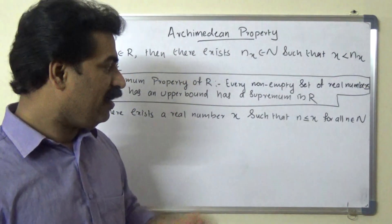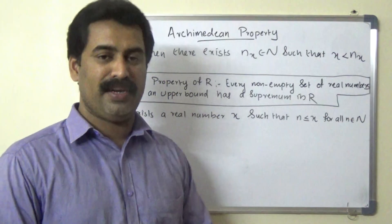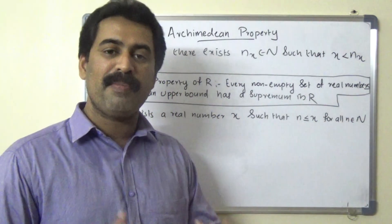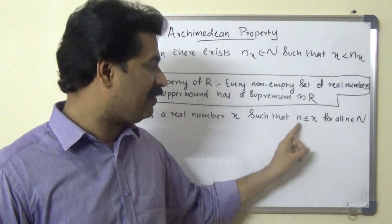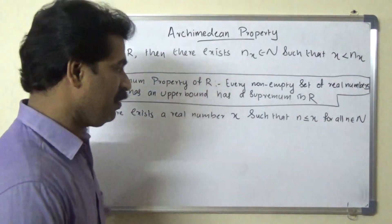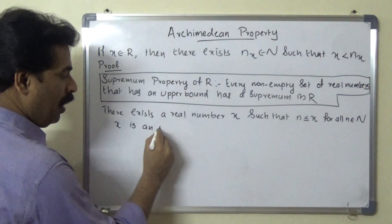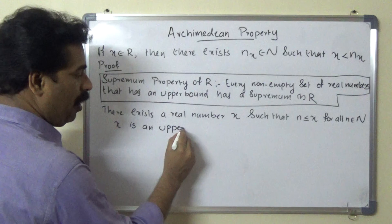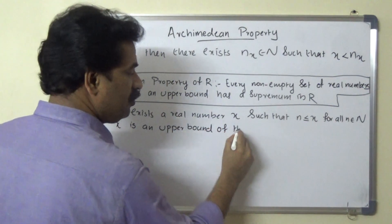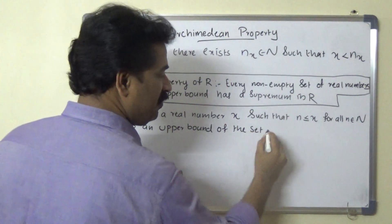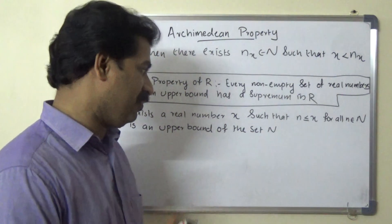In this case, we can say that small x is an upper bound of capital N, because every element in capital N is less than or equal to small x. So x is an upper bound of the set capital N.